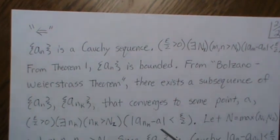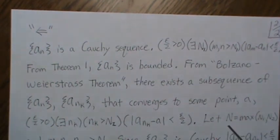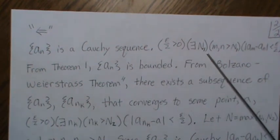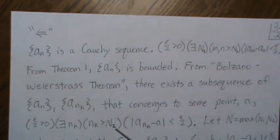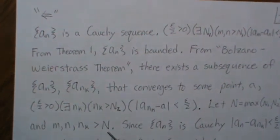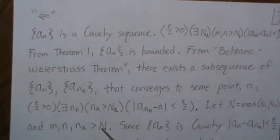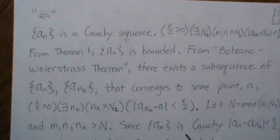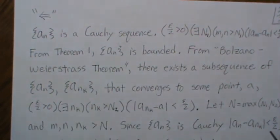So now let's let capital N be the maximum of N_1 and N_2. So that means M, N, and n_k are all greater than N. Now since A_n is a Cauchy sequence, we know this is true.